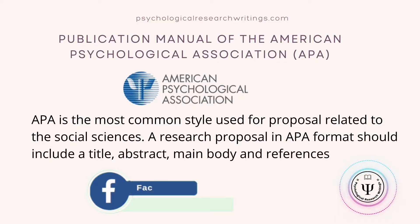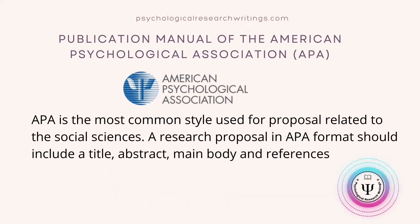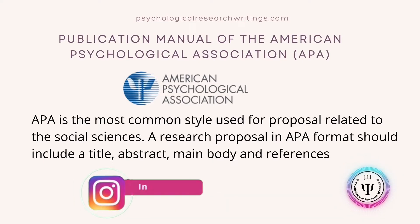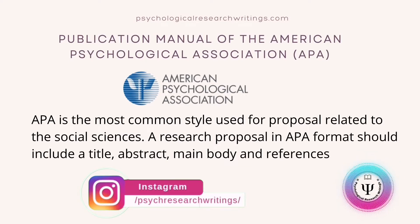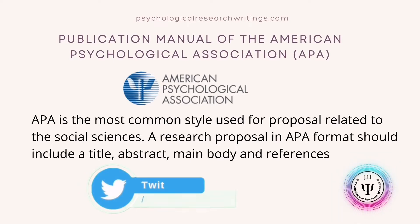APA is the most common style used for proposals related to the social sciences. A research proposal in APA format should include a title, abstract, main body, and references. There are many variations in writing a proposal and you may get confused about what the authentic format is in this case.